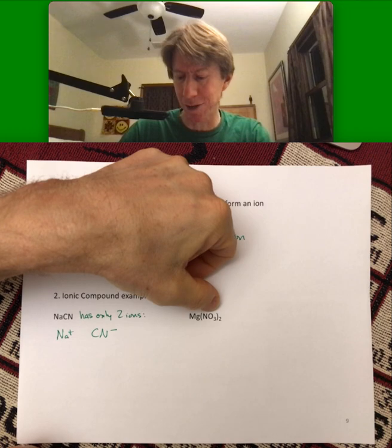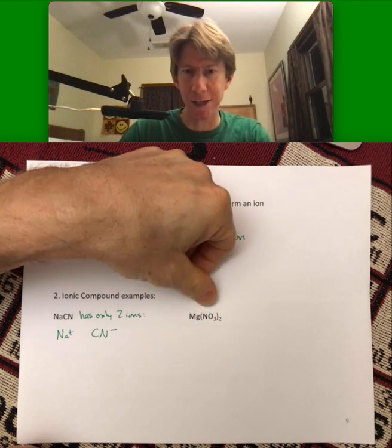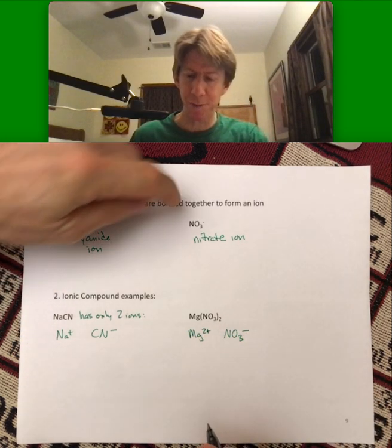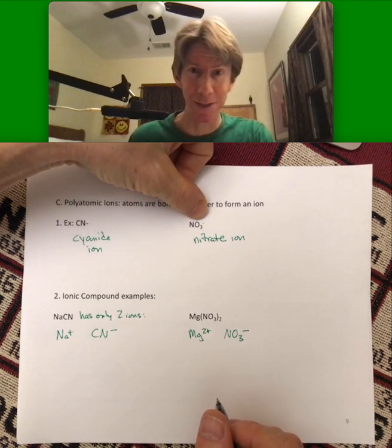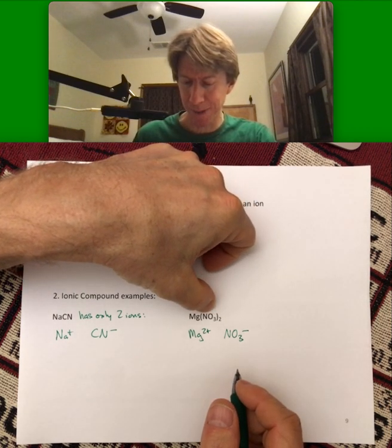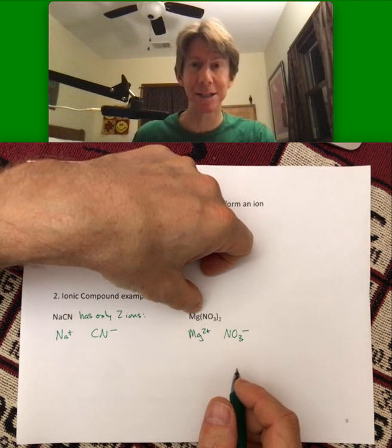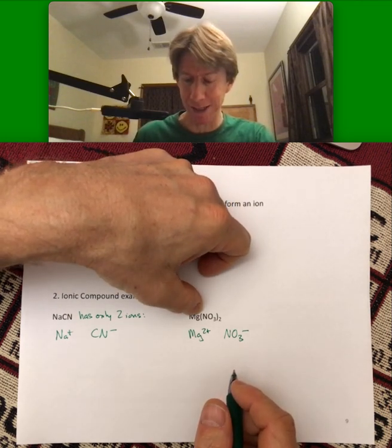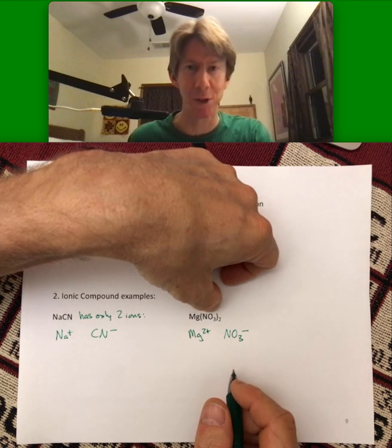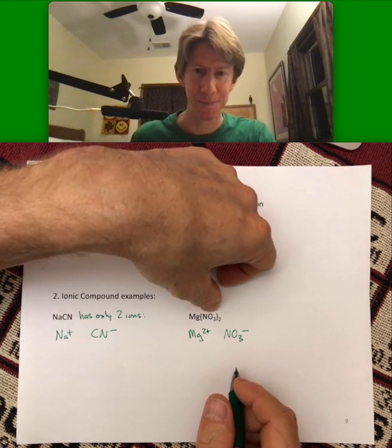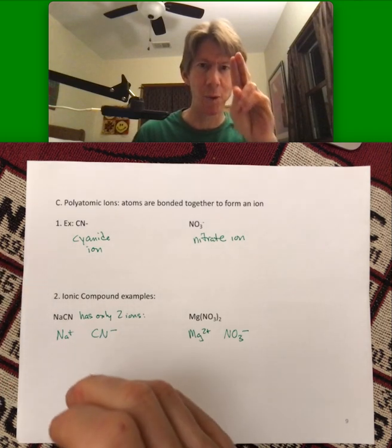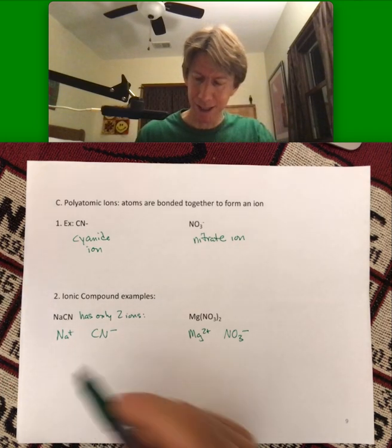Parentheses are helpful when they're there because that tells you that this thing stays together as one thing. And once you memorize, and again it's significant work I'm not going to say otherwise, that nitrate is a minus one ion, and you can see that there are two of them, it will help you figure out that magnesium is two plus, or you memorize that magnesium is two plus, and that means since there's two of them, nitrate just must be minus one. There are hints out there, but the important thing I'm trying to get across right now is that cyanide is one thing, not two separate things. Same thing with nitrate.